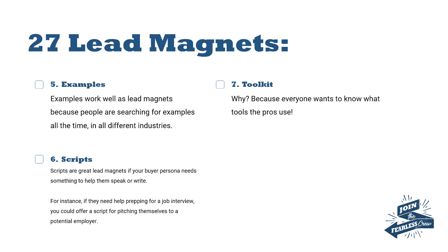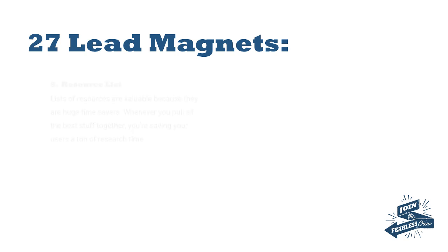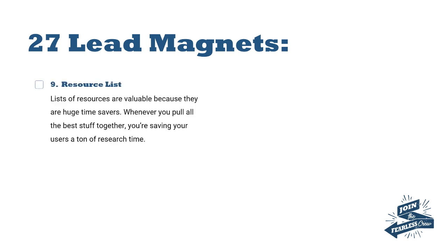Number seven is some kind of toolkit, because everybody wants to know what tools the pros use. Number eight is a web app. Mobile phones are prolific, so having some kind of app — either on your website or a native phone app requiring a login — means users have to sign in by email. A lot of apps are what we call freemium: they start out free and then if you want advanced features you upgrade to premium.